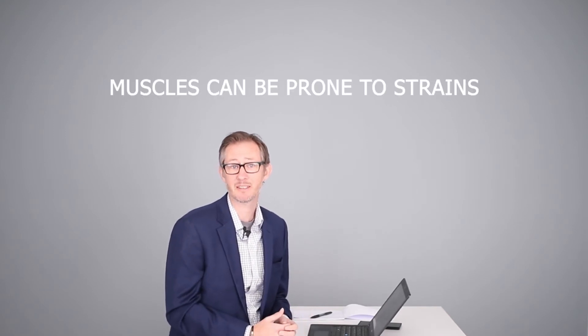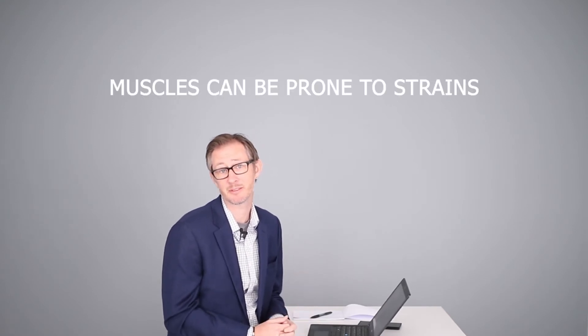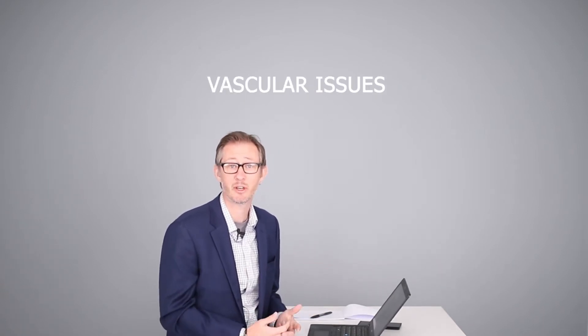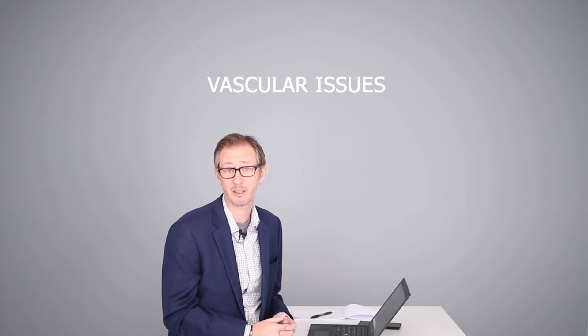First, let's talk about some of the effects of sitting too long. Large muscles in the legs can be weakened and be prone to strains. Your hip muscles can actually shorten, leading to hip problems. Varicose veins can develop and cause blood clots, and lower back issues are one of the biggest problems.